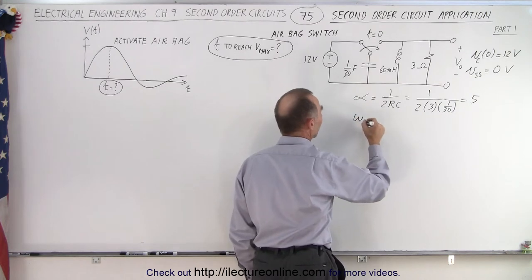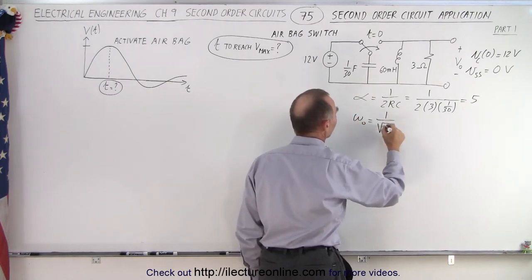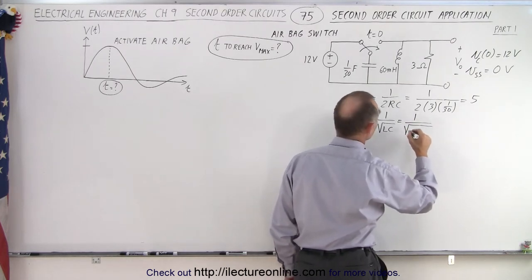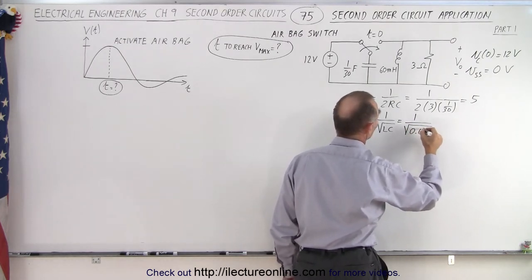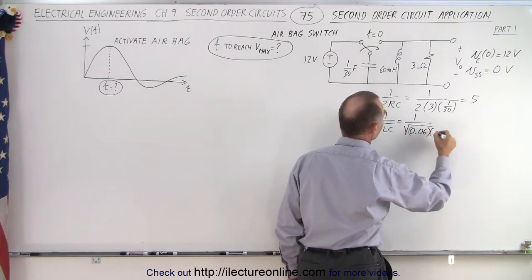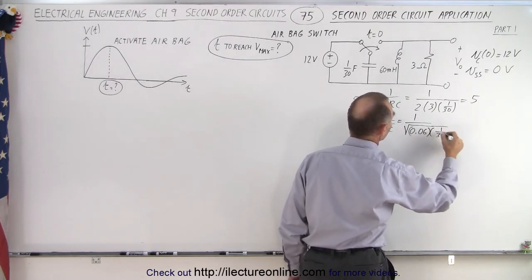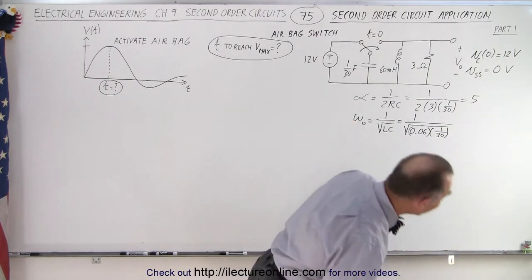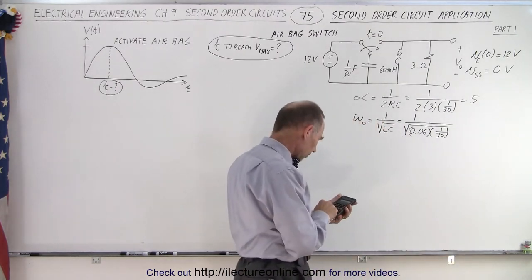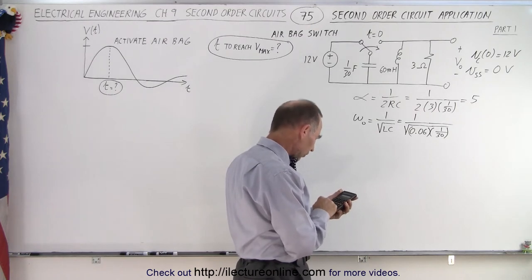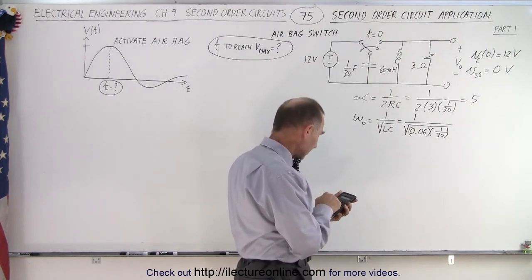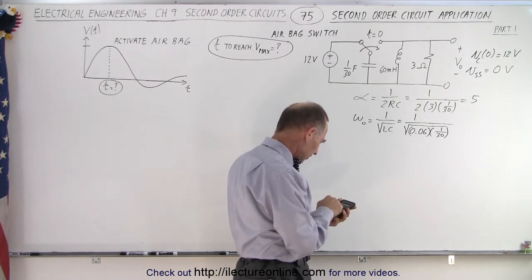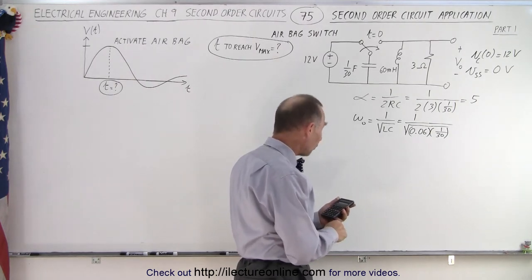For omega sub-naught, that's 1 over the square root of LC, which is 1 over the square root of L — 60 millihenries, 0.06 — multiplied by 1/30. We take the square root of that and then the inverse. So 0.06 divided by 30, take the square root, then take the inverse, and we get 22.36.